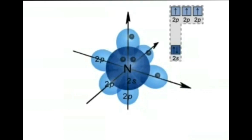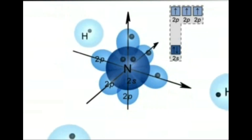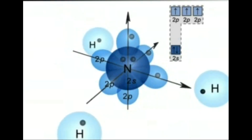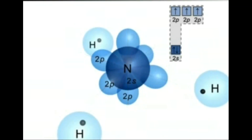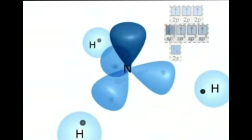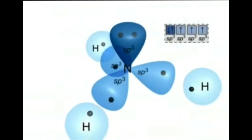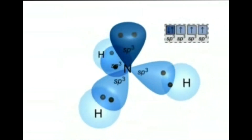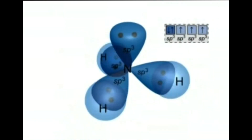Here we visualize the nitrogen atom undergoing sp3 hybridization. One of the tetrahedrally oriented sp3 hybrids is filled with a lone pair, and the H atoms overlap the other 3 to form 3 NH bonds.